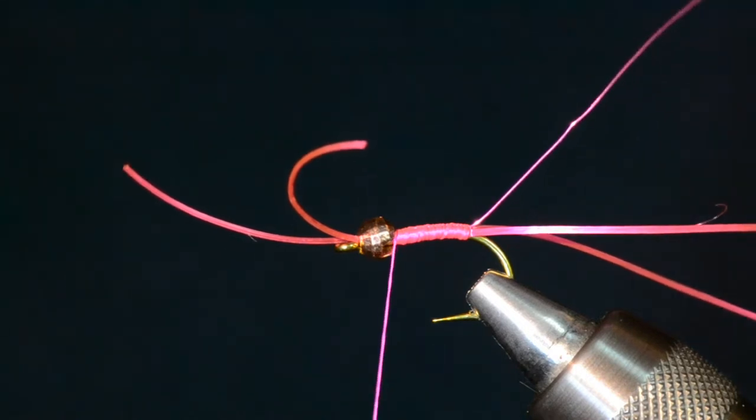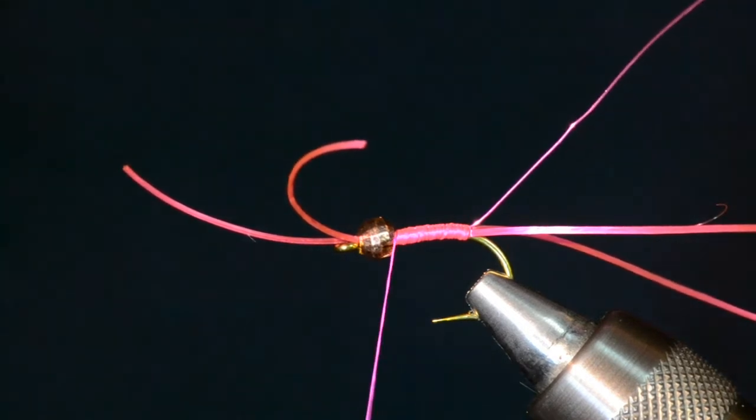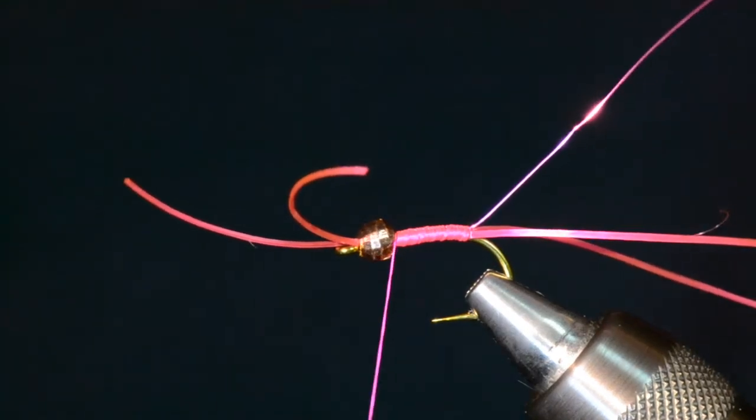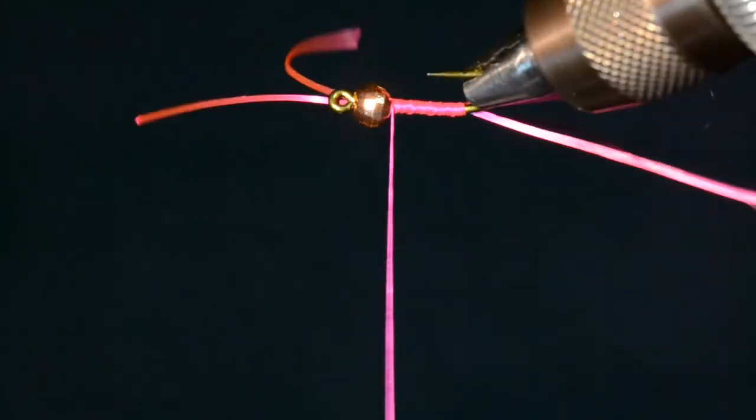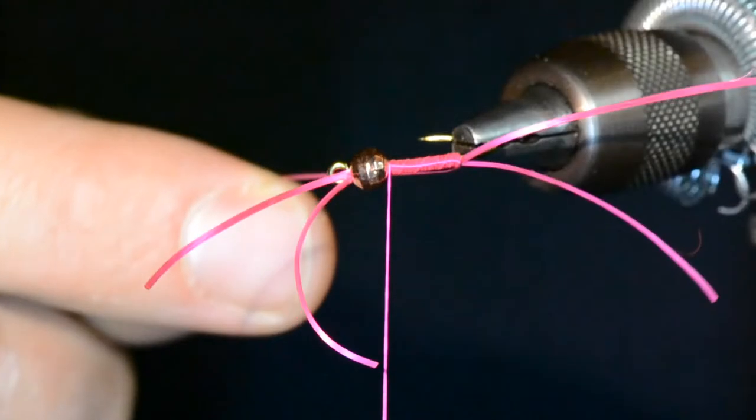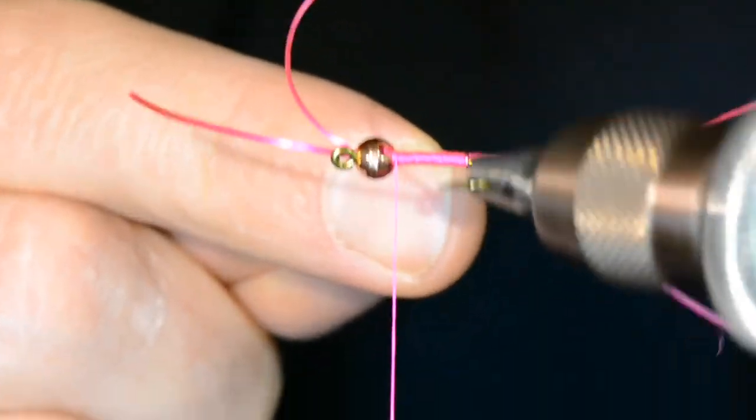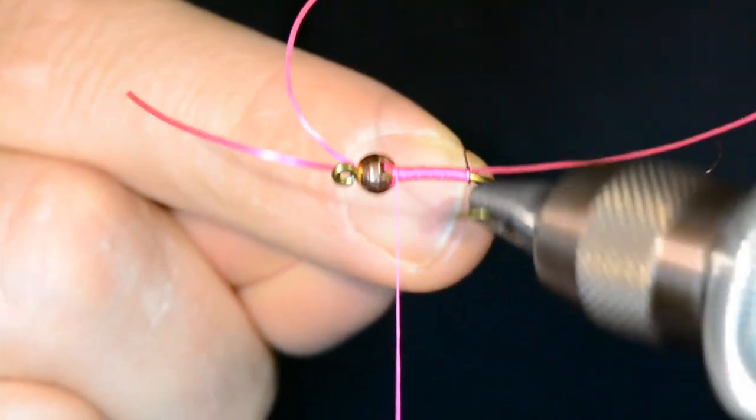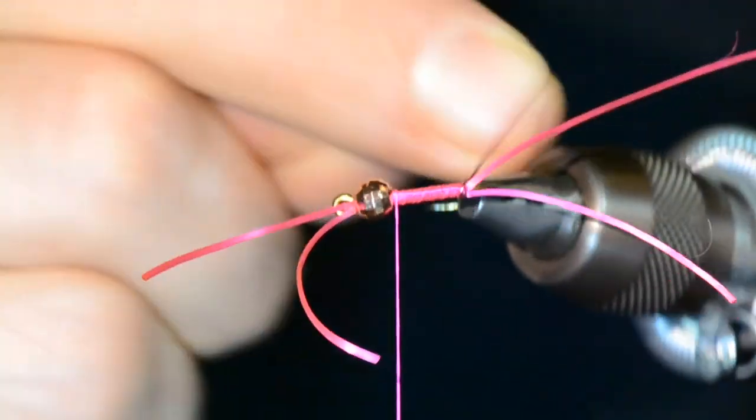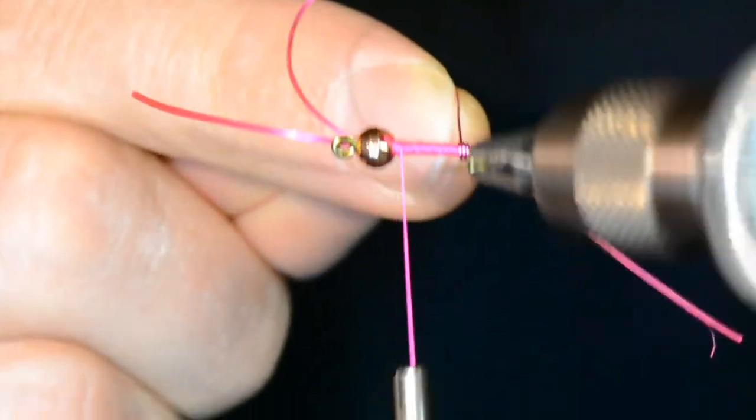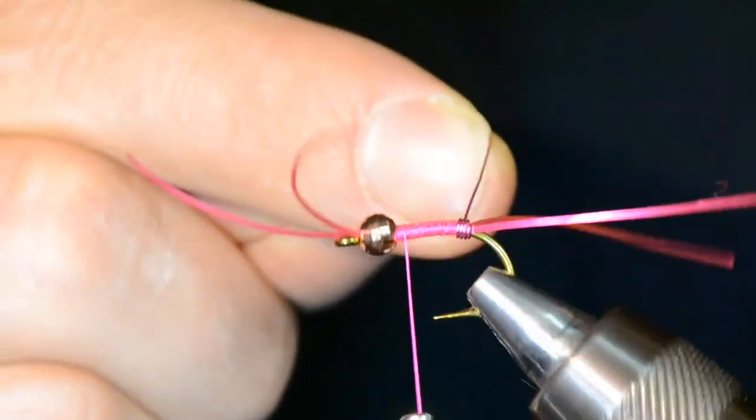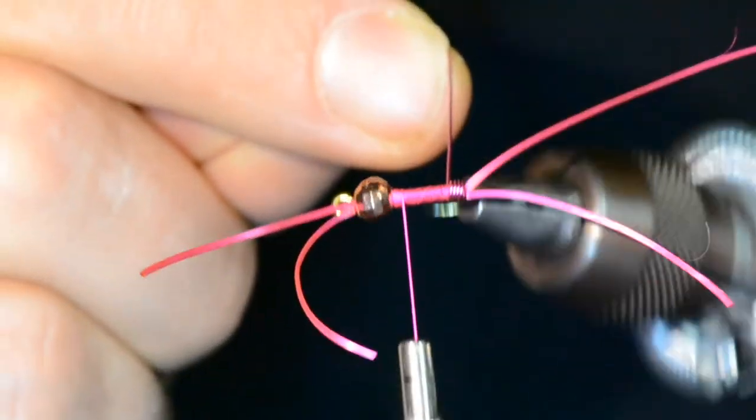Then at this point we're going to make touching wraps with the wire and wrap back up to the bead, kind of like doing a brassy or a copper john, same concept there. And again, because I tie on a rotary vise, I like to take advantage of that, being able to spin the hook shank instead of wrapping around it. On a fly like this, it's kind of nice. It lets you kind of carefully make those wraps and keep a close eye on them. Ideally these should be touching each other, nice and dense there.